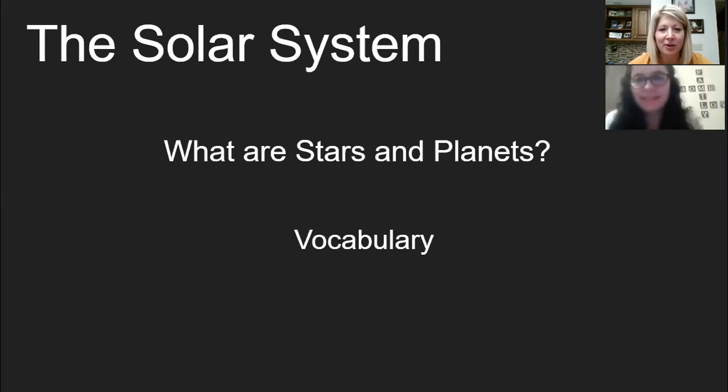Today we're going to talk about some vocabulary words for science in our solar system chapter. These may be familiar to some of you and if so then it'll just be a review, or if you haven't started in your classroom yet then we're going to start it today. The first chapter in our solar system chapter was what are stars and planets? Let's take a look at the vocabulary.